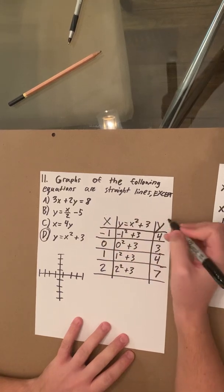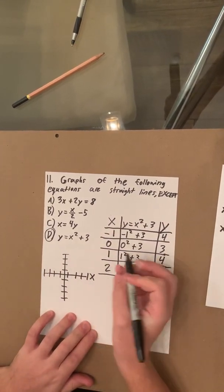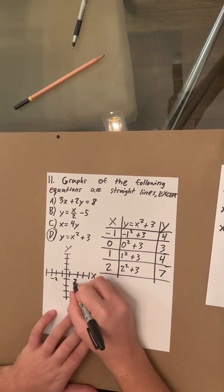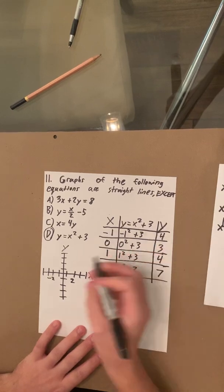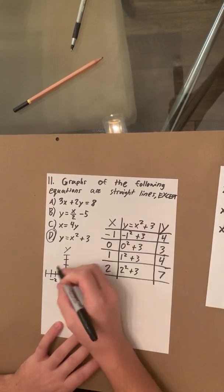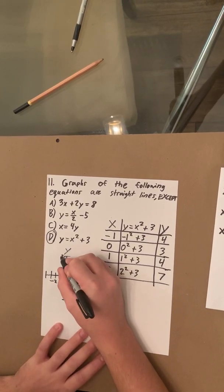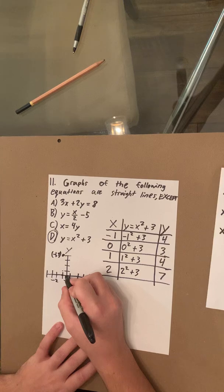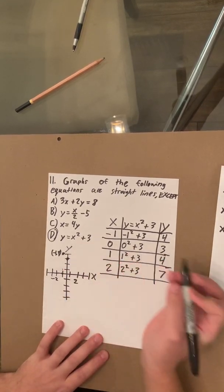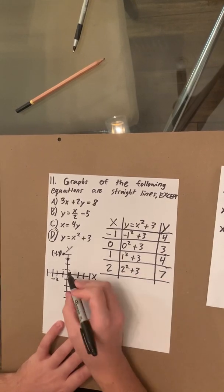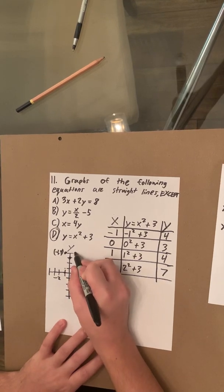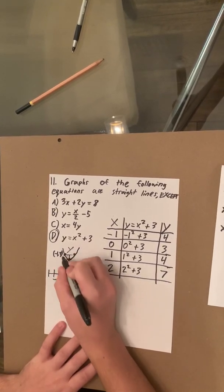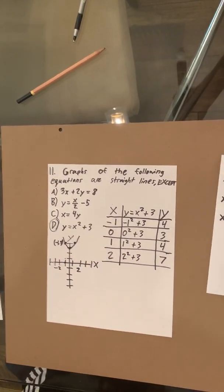Now we have our x-coordinate and our y-coordinate. This is the x-axis and this is the y-axis, with the negative side and positive side. So we start with negative 1, 4 — we plot that point. Then 0, 3 at the origin going up 3. Then 1, 4 going positive 1 and up 4. We don't even need to plot 2, because if we follow these dots, you can already see that it curves right here. That is how you can double-check that your answer is D.